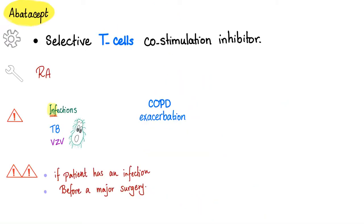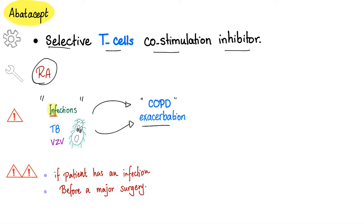Let's start with abatacept. This is a non-TNF inhibitor DMARD — a selective T-cell co-stimulation inhibitor. We use it for rheumatoid arthritis. Side effects include infections and even COPD exacerbation, because one of the things that can exacerbate COPD is infections. Contraindications: active infection right now, and before major surgery, because perioperative patients are at higher risk of infection.